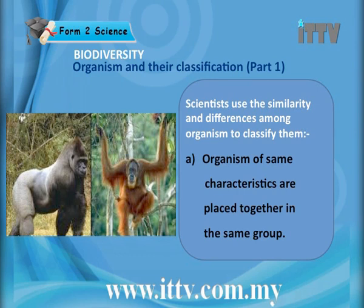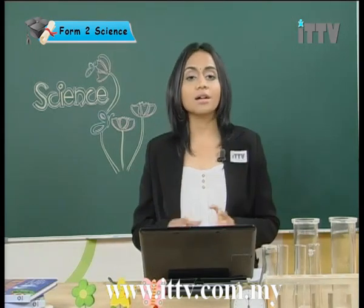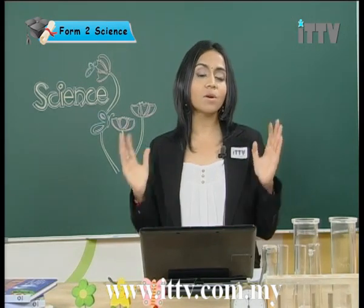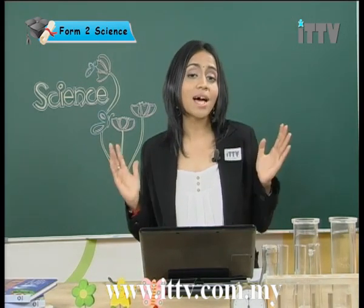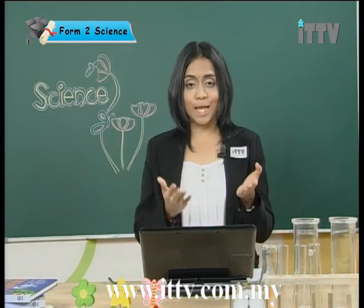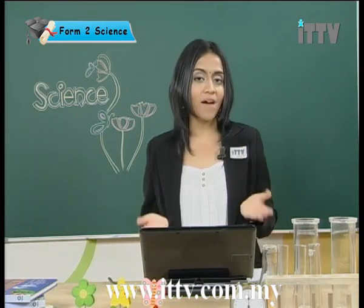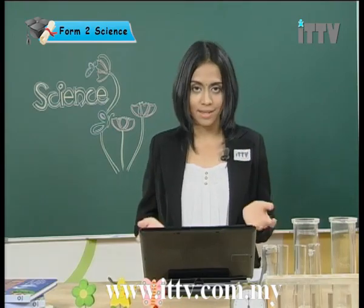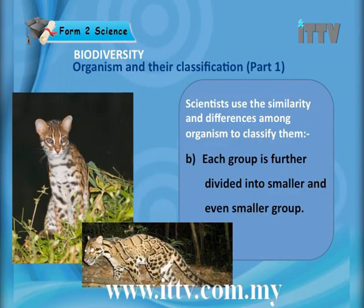Nobody actually knows how many species of organisms exist, but scientists have estimated about 10 to 100 million kinds of organisms on earth. The sorting of these organisms into groups is known as classification of organisms. Organisms of the same characteristic are placed together in the same group — for example, all organisms that have wings are placed into the same group.